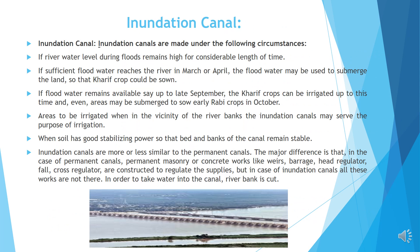Inundation canal. Inundation canals are made under the following circumstances: if the river water level during floods remains high for a considerable length of time; if sufficient flood water reaches the river in March or April, the flood water may be used to submerge the land so that kharif crop could be sown; if flood water remains available up to late September, the kharif crops can be irrigated and areas may be submerged to sow early rabi crops in October. Areas to be irrigated should be in the vicinity of the river banks, and the inundation canals may serve the purpose of irrigation when the soil has good stabilizing power so that the bed and banks of the canal remain stable.